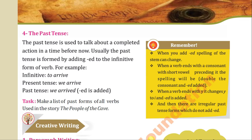When you add -ED, the spelling of the stem can change. When a verb ends with a consonant with a short vowel preceding it, the spelling doubles the consonant and -ED is added. When a verb ends with Y, it changes Y to I and -ED is added. When there are irregular past tense forms, we do not add -ED. You can form a list of past forms of all verbs used in the story 'The People of the Cave' and do practice by reading the story, since it is all written in the past tense.